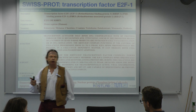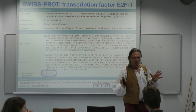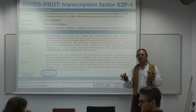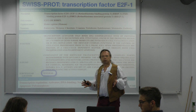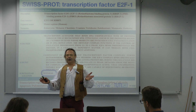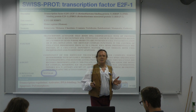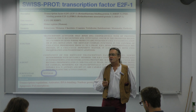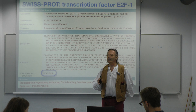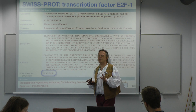SwissProt is curated. UniProt is essentially all protein sequences — though that's not quite right. How many protein sequences do we know? Humans have about 20,000 proteins. Someone says 200,000. All of these are sort of limited databases — everything that we know.